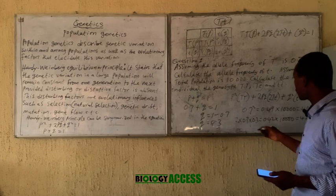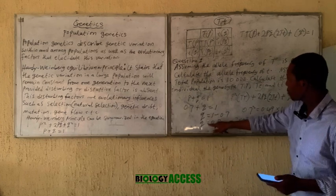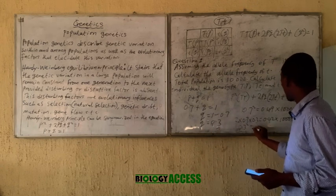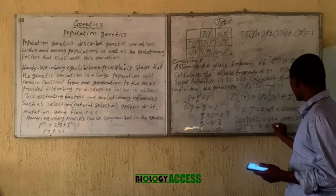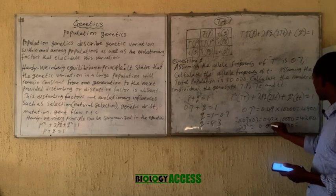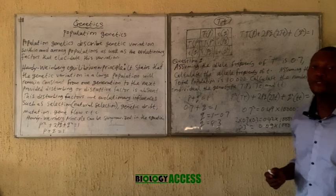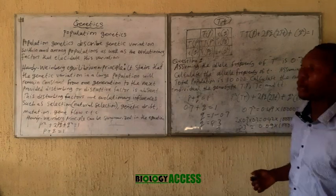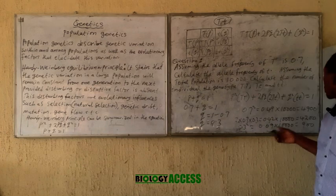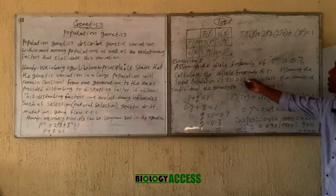For the tt genotype we use q²: 0.3² = 0.09. Multiplying by the total population gives 0.09 × 10,000 = 900 individuals with the tt genotype. To verify your answer, add all three results together: 4,900 + 4,200 + 900 = 10,000, which equals the total population, confirming our answers are correct.